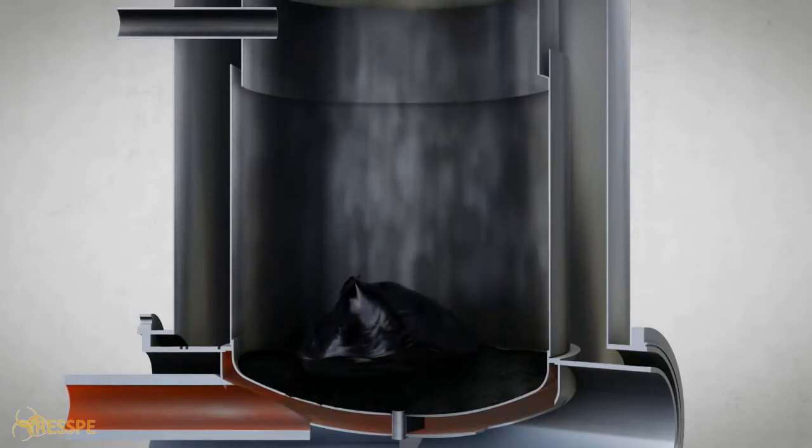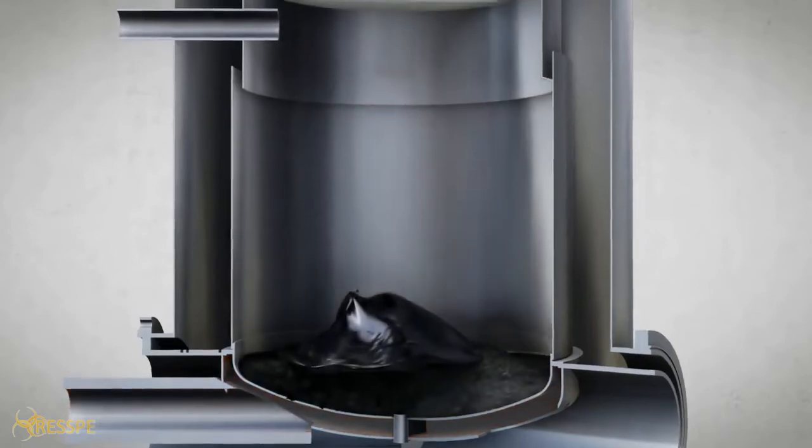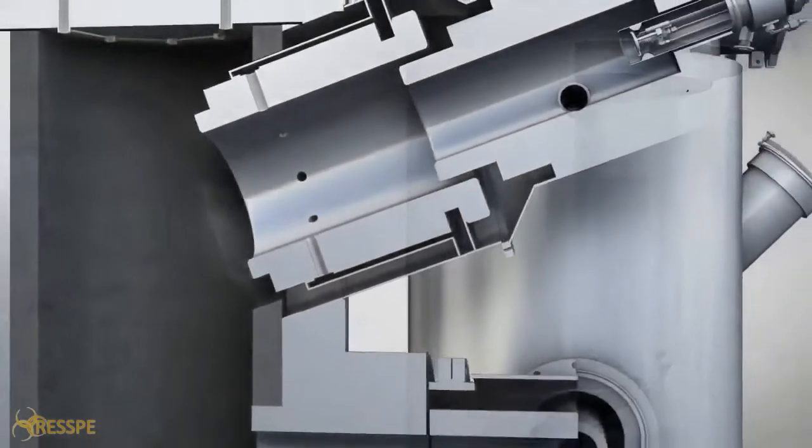The biochar accumulates at the bottom of the gasifier while the syngas travels into the combustion chamber where it is ignited.